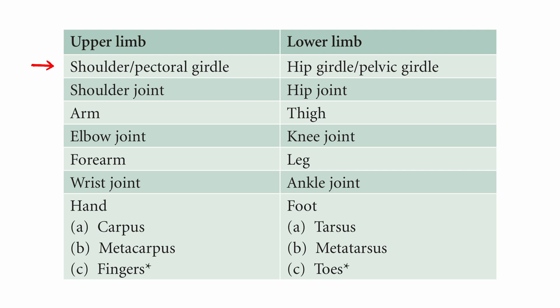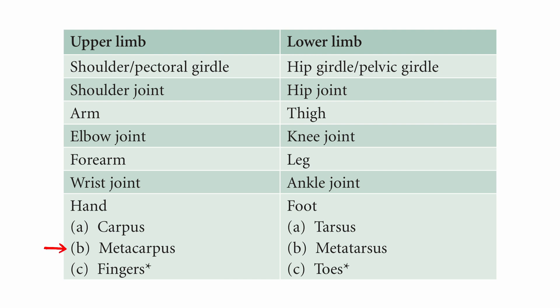The homologous parts of the upper and lower limbs are: the shoulder girdle is equivalent to the hip girdle; the shoulder joint is equivalent to the hip joint; the arm is equivalent to the thigh; the elbow joint is equivalent to the knee joint; the forearm is equivalent to the leg; the wrist joint is equivalent to the ankle joint; and in the hand, the carpus equals the tarsus, the metacarpus equals the metatarsus, and the fingers and toes are similar.